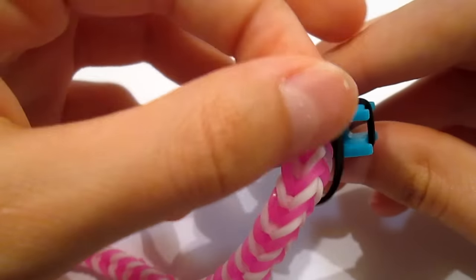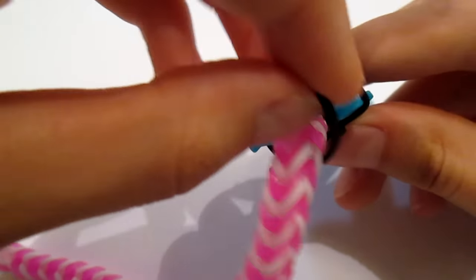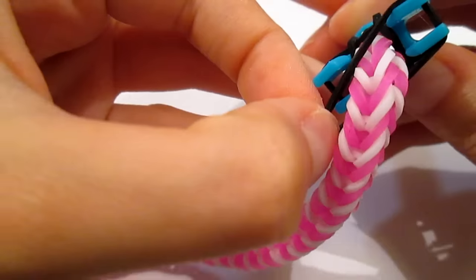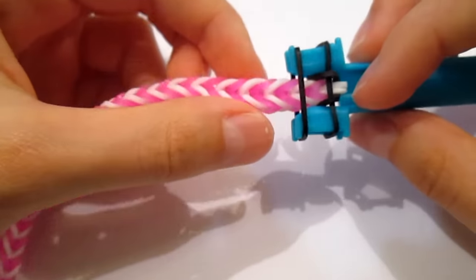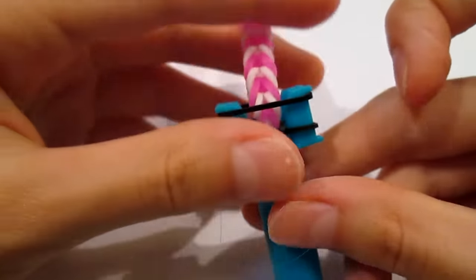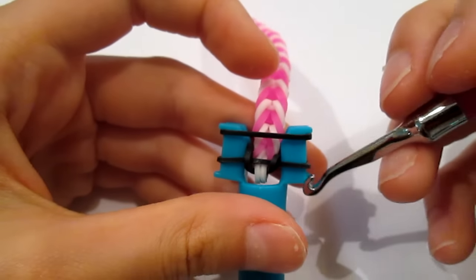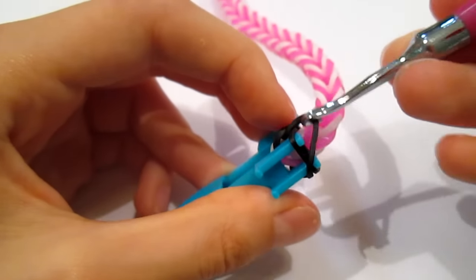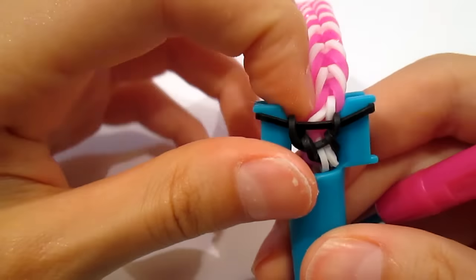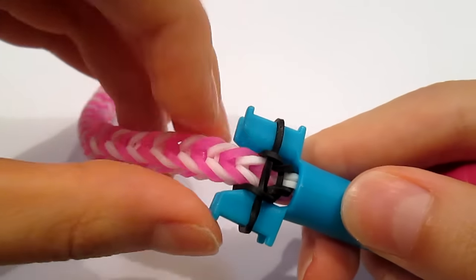And then, place it on these pegs. Like that. And then, you loop the bottom over like a single. And then push it down.